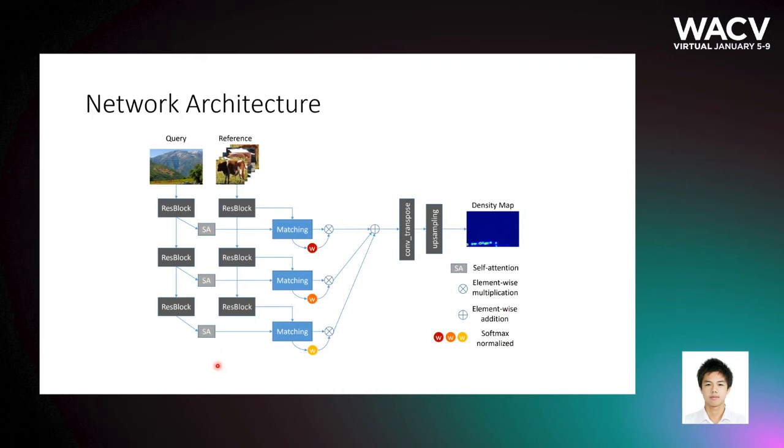Our network is mainly built upon a two-stream ResNet network, with matching mechanism applied on the output of each ResNet block, followed by the learnable weight fusion that combines the matching score map by different scales. The output of this network is a density distribution map, and the final count is calculated by taking the integration of the predicted density map.